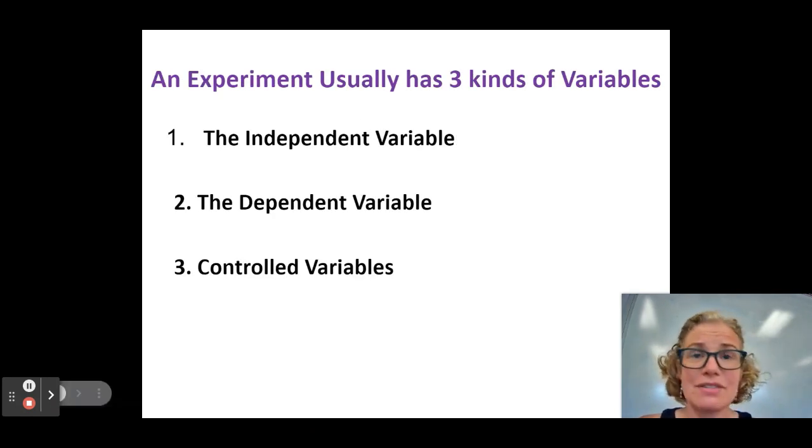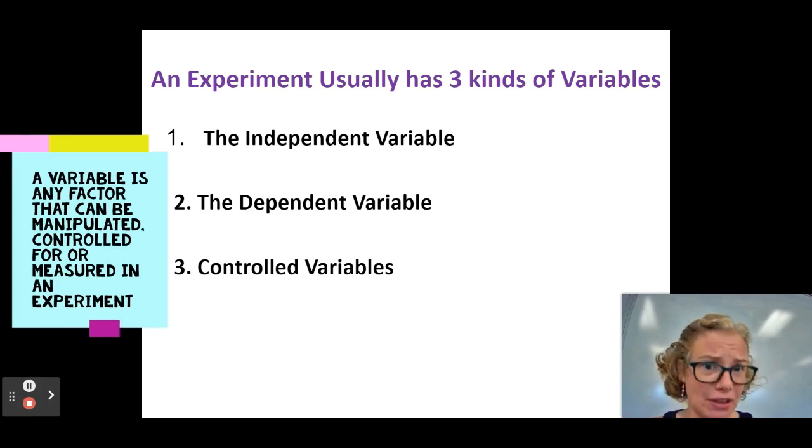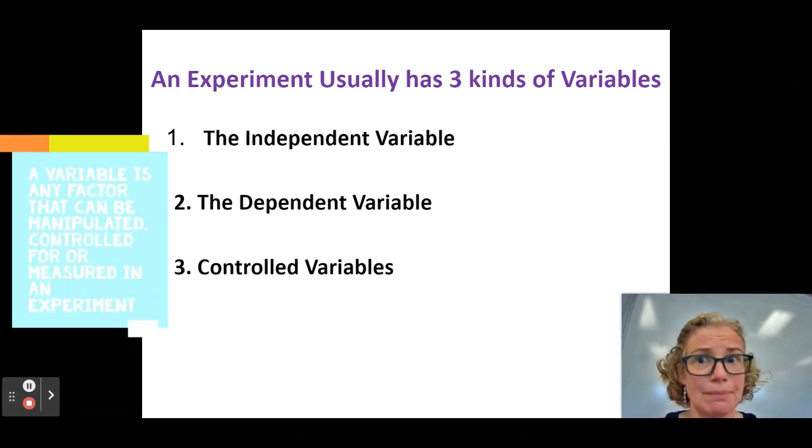So there's three kinds of variables in an experiment. So sometimes kids are saying what do you mean variables? Well you know how like in math class you have variables X Y. Well we have things that can change in an experiment. We call those variables. We have the independent variable, the dependent variable, and the controlled variables. We're gonna go through each one. They have very different meanings and different purposes within a lab.